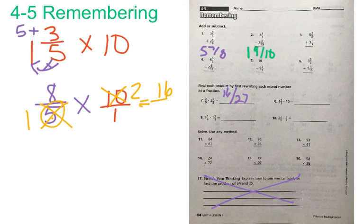Now what we have is 8 times 2, which equals 16, over 1 times 1, which is 1. And 16 over 1 equals 16. So your answer for number 8 is going to be 16.